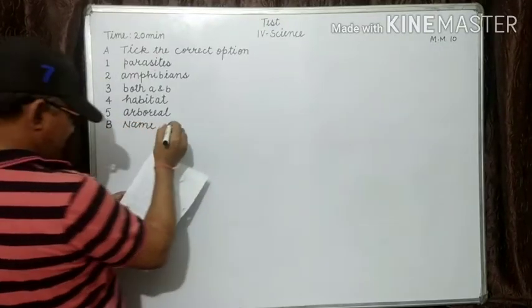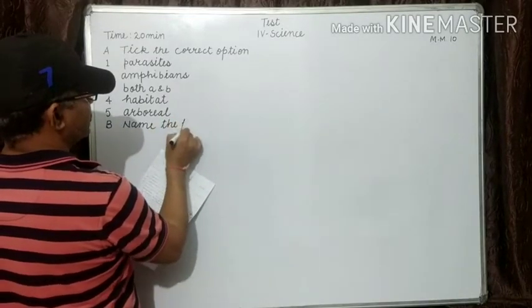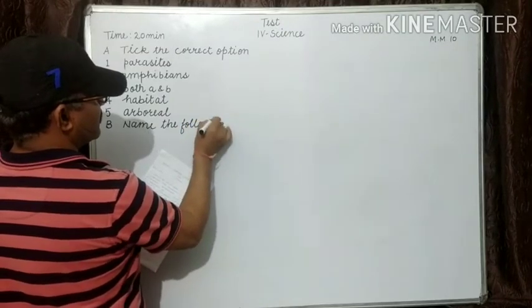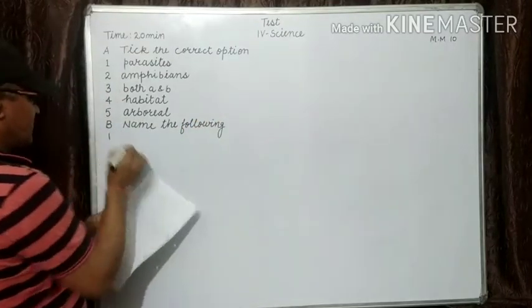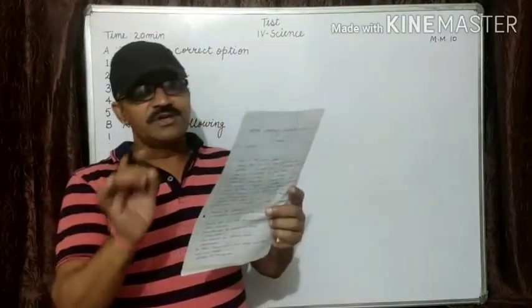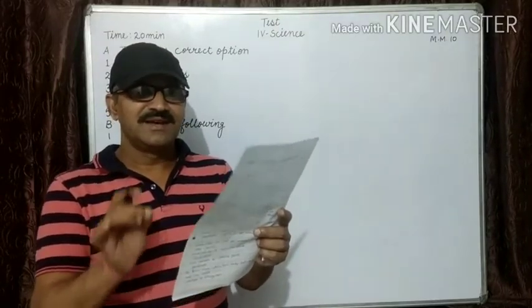Fill in the following. Number one: animals that live mostly on trees are called - answer is arboreal.